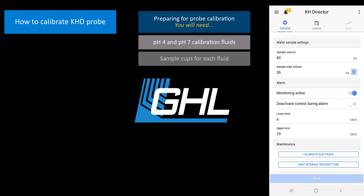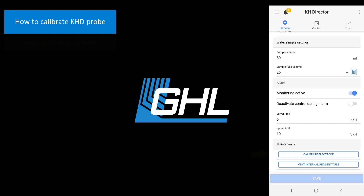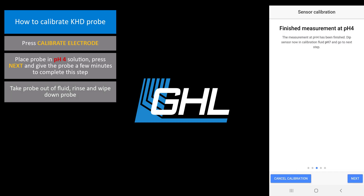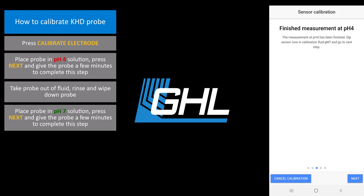You will also need two sample cups for holding small amounts of each fluid. You can prepare these samples by pouring pH 4 fluid into one cup and pH 7 fluid into another cup. In the Maintenance section, press Calibrate Electrode. Take the KHD probe and sit it in the sample of pH 4 fluid, then press Next. Give the probe a few minutes to complete this step. Take the probe out of the fluid, then rinse and wipe down the probe. This will prevent any cross contamination between the calibration fluids and water used for rinsing. Place the probe in the pH 7 fluid, then press Next.